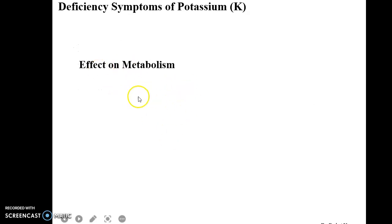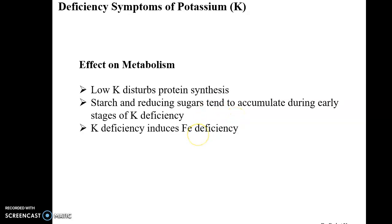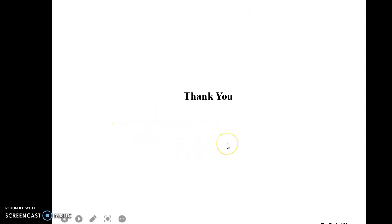At the metabolic level, low potassium disturbs protein synthesis. Starch and reducing sugars tend to accumulate during early stages of potassium deficiency. Potassium deficiency also induces iron deficiency as well.